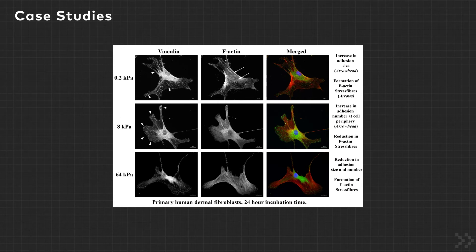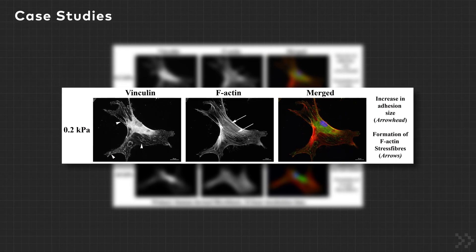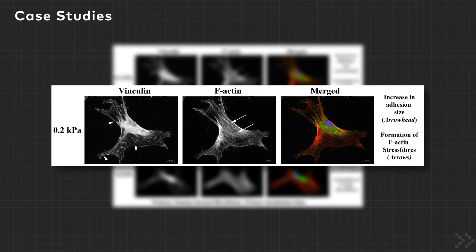In this case study, human dermal fibroblasts were grown across three stiffnesses: 0.2, 8, and 64 kPa coated with collagen. After only 24 hours, it was clearly observed that the fibroblasts cultured on the softest surface, 0.2 kPa, experienced an increase in adhesion size alongside the formation of F-actin stress fibers.